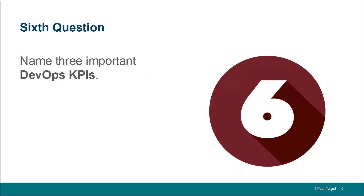Number six: name three important DevOps KPIs — key performance indicators. Some of the most important ones are mean time to failure recovery: if something goes wrong, how quickly can your team react? That involves both developers and operations, because it could be a problem in the code or a problem with maintaining servers and services. Deployment frequency — how often are we doing deployments — is a key one as well. And also taking a look at the percentage of failed deployments: how often do we deploy, and how often do those deployments fail and require a correction and redo? These are all basic KPIs for doing DevOps.